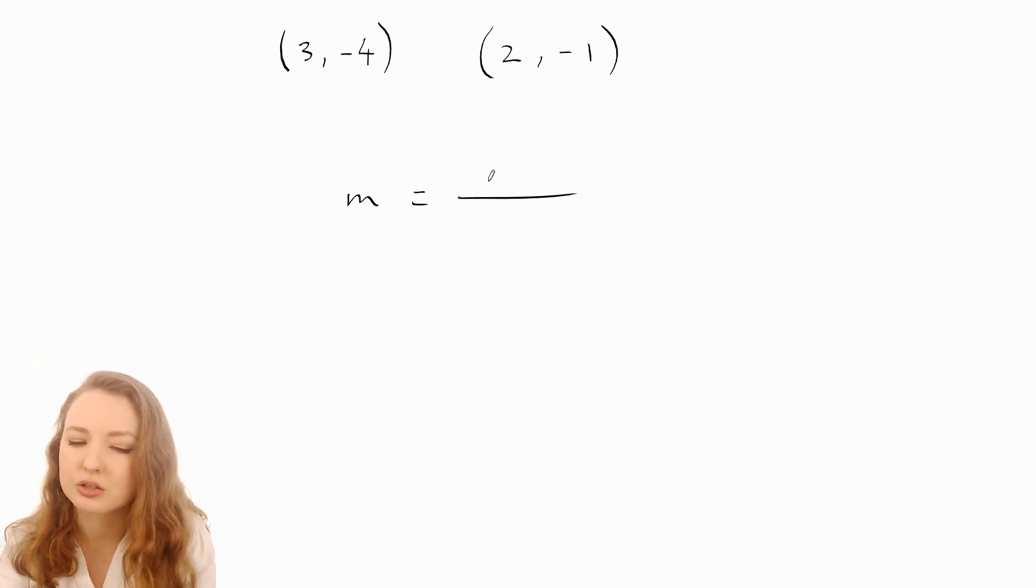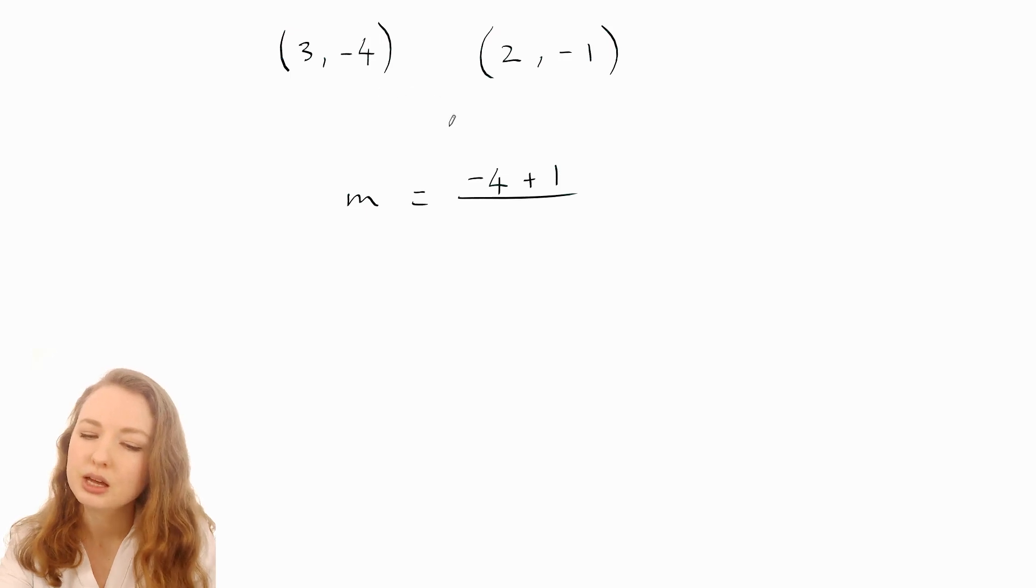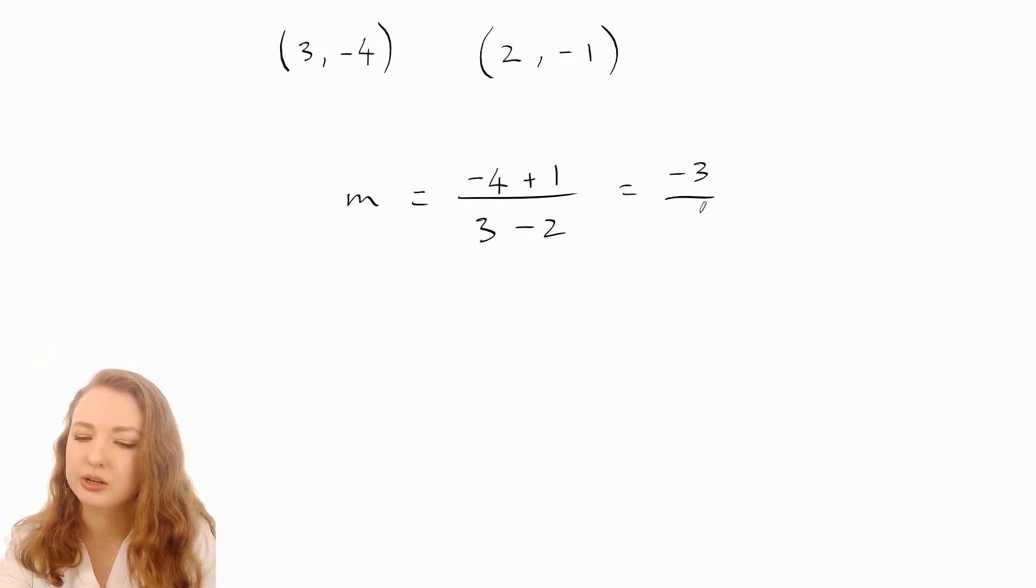Let's start with negative four minus negative one, which is the same as plus one. Then on the bottom, if I started with the negative four on top, I have to start with the three on the bottom. So three minus two makes negative three over one, which simplifies to negative three.